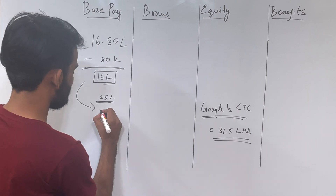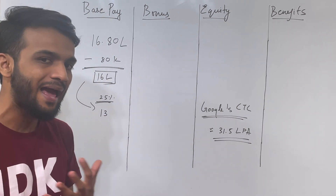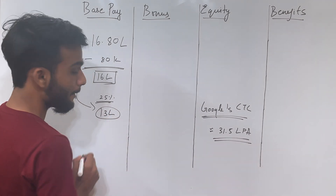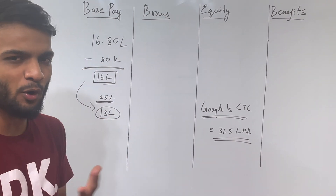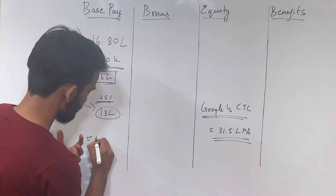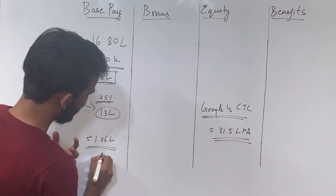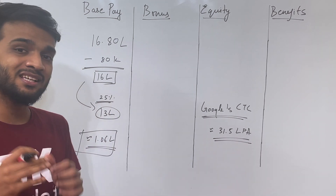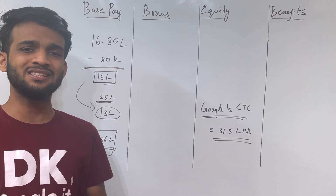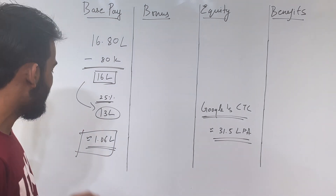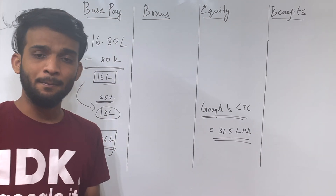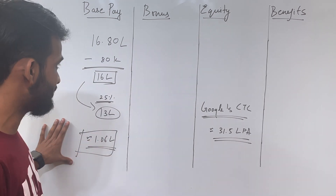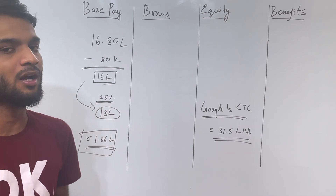After deducting the tax, this boils down to around 13 lakh. And if you divide this by 12, you get it around 1.06 lakh. This entirely depends on your tax savings — for a fresher who joins in July, the tax reduction will be less, hence you will get slightly more. But this is generally in the range of 1.06 lakh, plus or minus 2,000. This is what he gets into his bank account.